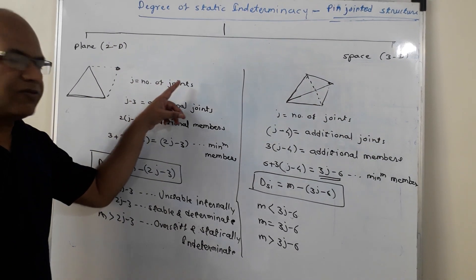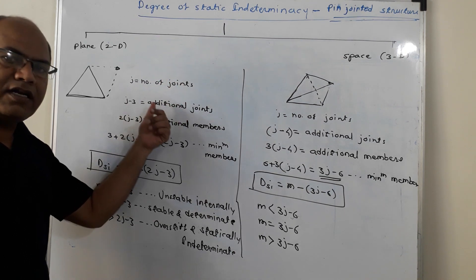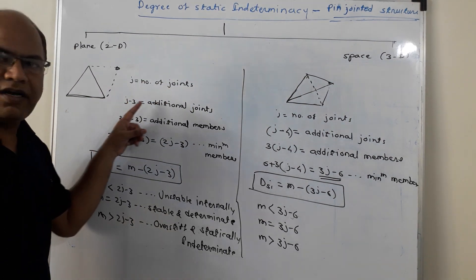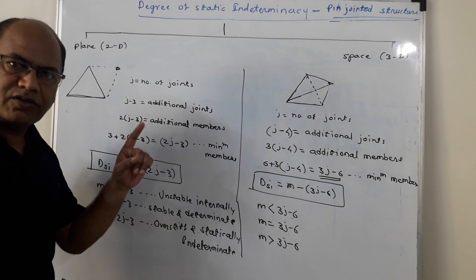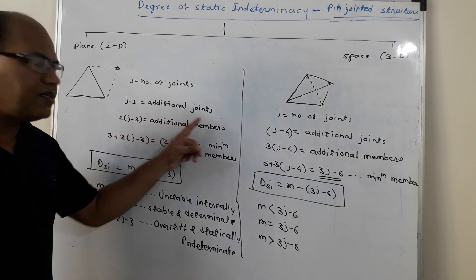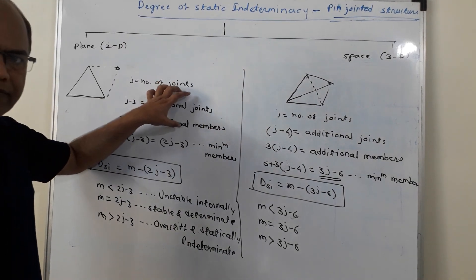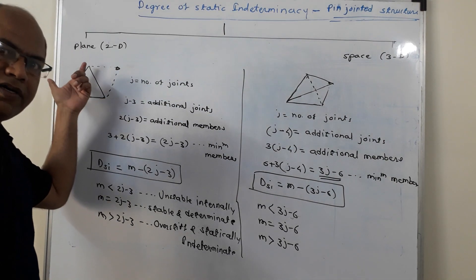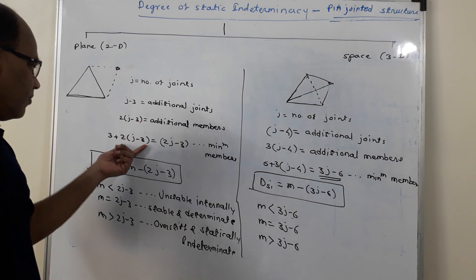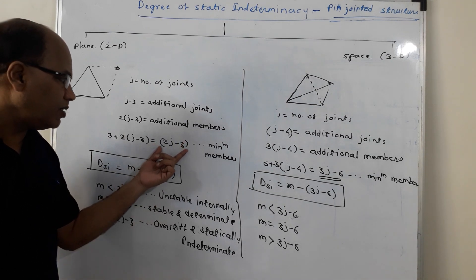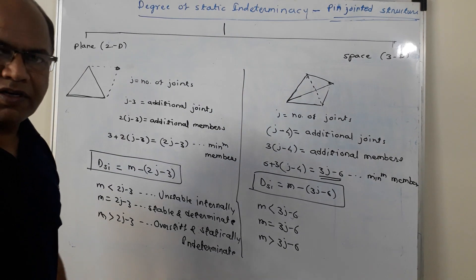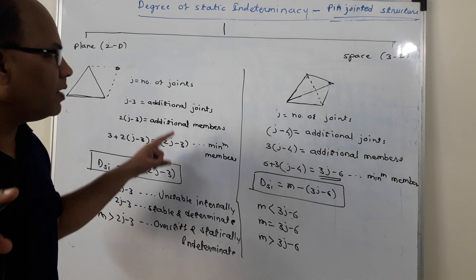If j is the number of joints, the additional number of joints will be equal to j minus 3, because in the basic truss element, already three joints are present. So, the additional members become 2(j − 3). Adding these to the initial 3 members gives the total minimum members as 2j − 3. So, the minimum number of members required in case of a pin-jointed plane structure is 2j − 3.